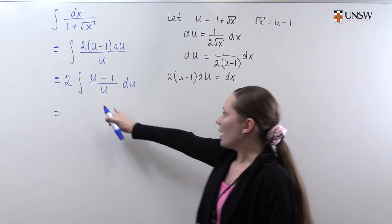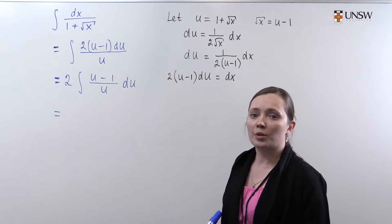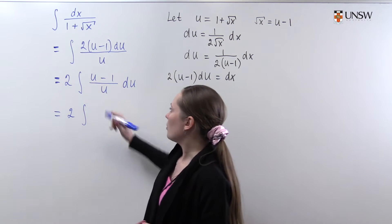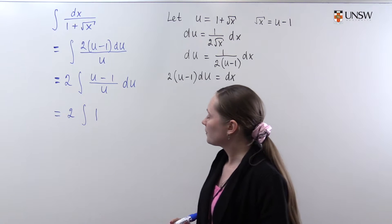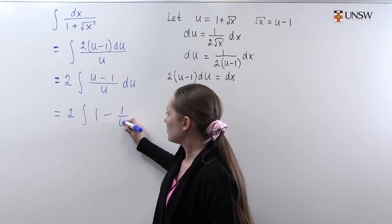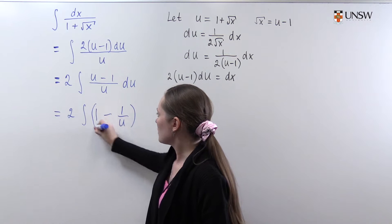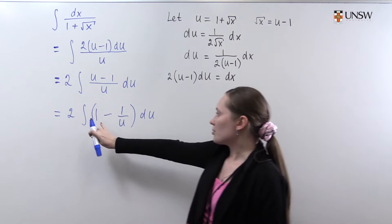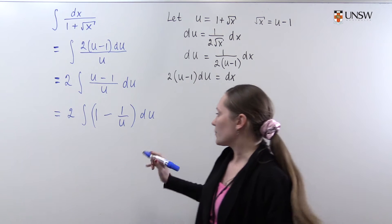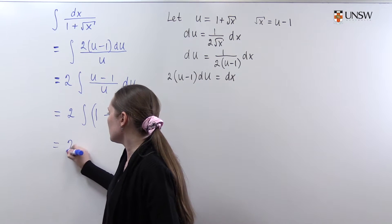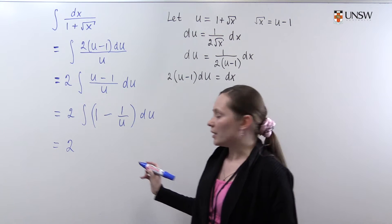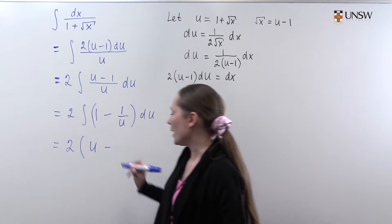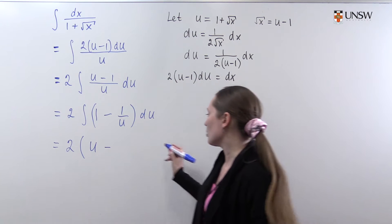Next we divide every term of the numerator by u: we get 2 times the integral of (1 minus 1 over u) du. Then we integrate every term separately: the integral of 1 is u, minus the integral of 1 over u which is the logarithm of u.